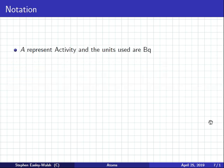So, now, we use the letter A to represent activity and the units are BQ. Example, 5 kilo BQ. N represents number of atoms.